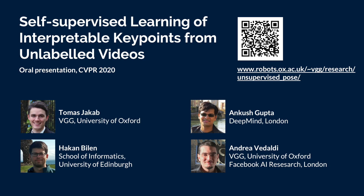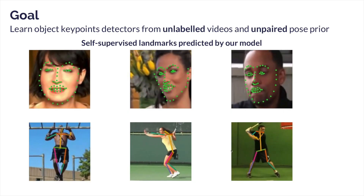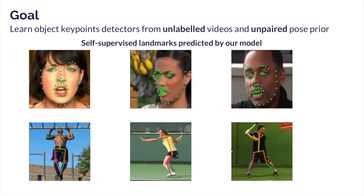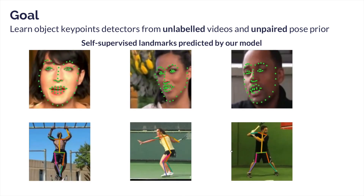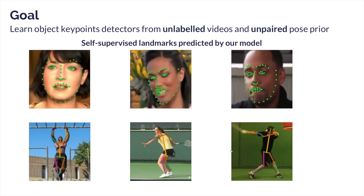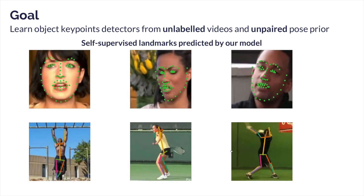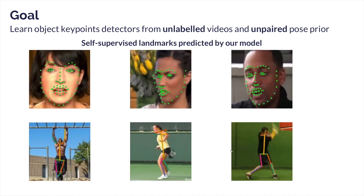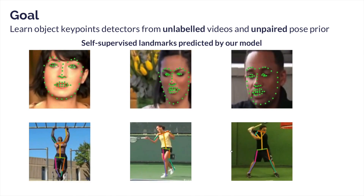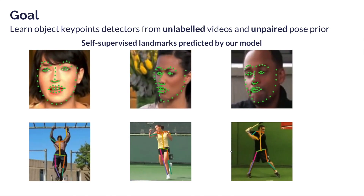My name is Tomas Shekab and I will present our work on self-supervised learning of interpretable keypoints from unlabeled videos. In recent years there has been impressive success in computer vision achieved through strong supervision. However, that requires large amounts of labeled data that can be expensive to collect. Hence, we ask the question: how can we leverage unlabeled data, namely object category specific videos, to learn object keypoint detectors?